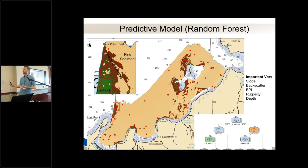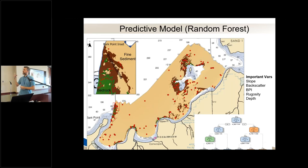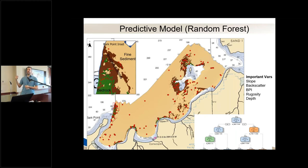This was a very useful approach. It gave us high accuracy and helped us understand which remote sensing variables were important to substrate types. Slope, backscatter, the bathymetric position index, rugosity, and depth were all really important for substrate discrimination — listed here in order of importance for this particular model. What's surprising to me is that depth was actually fifth of those five important variables; texture and backscatter were more important.